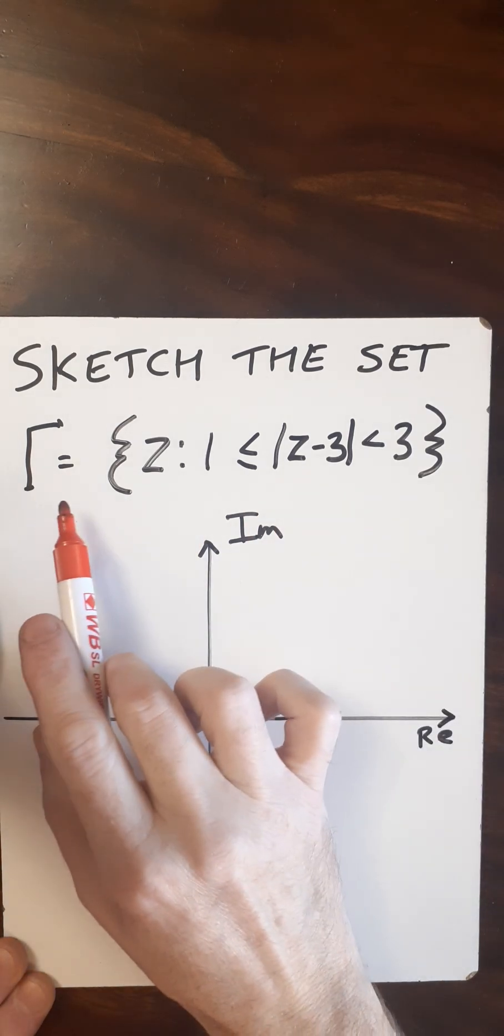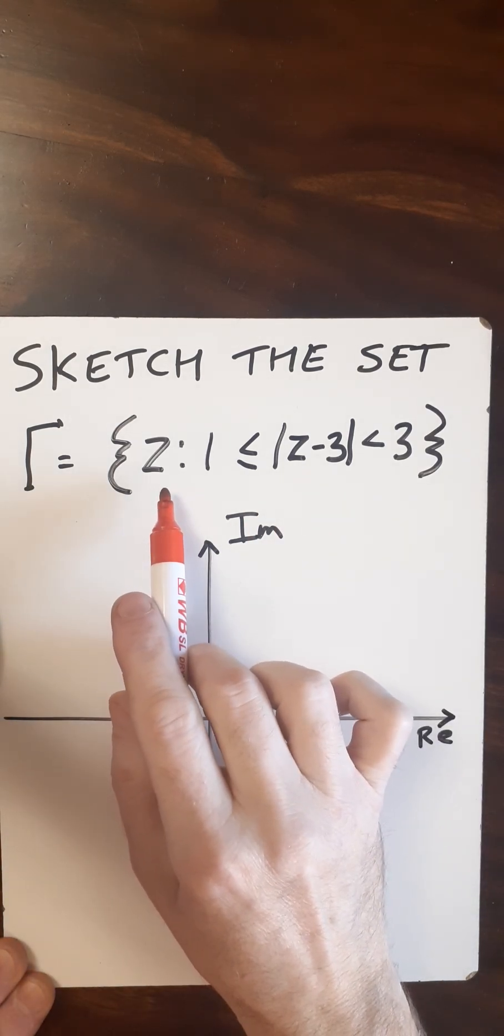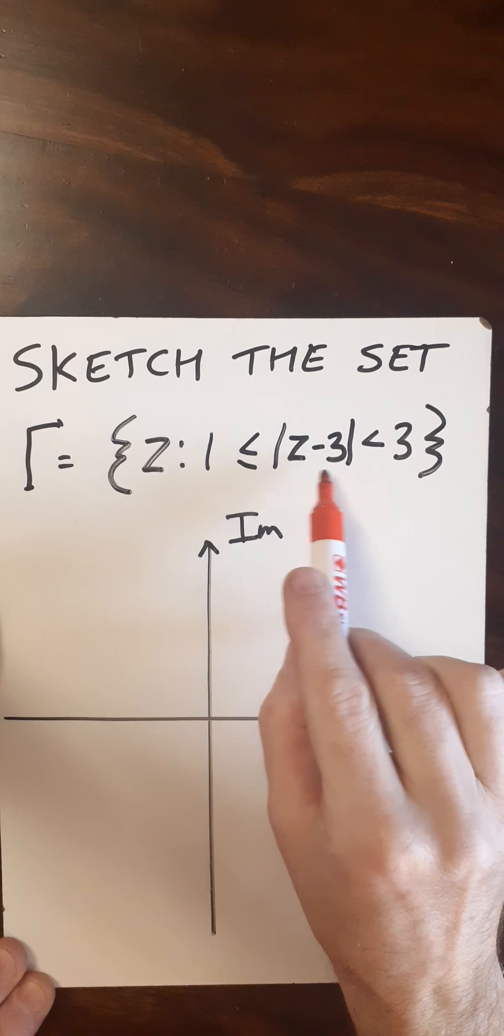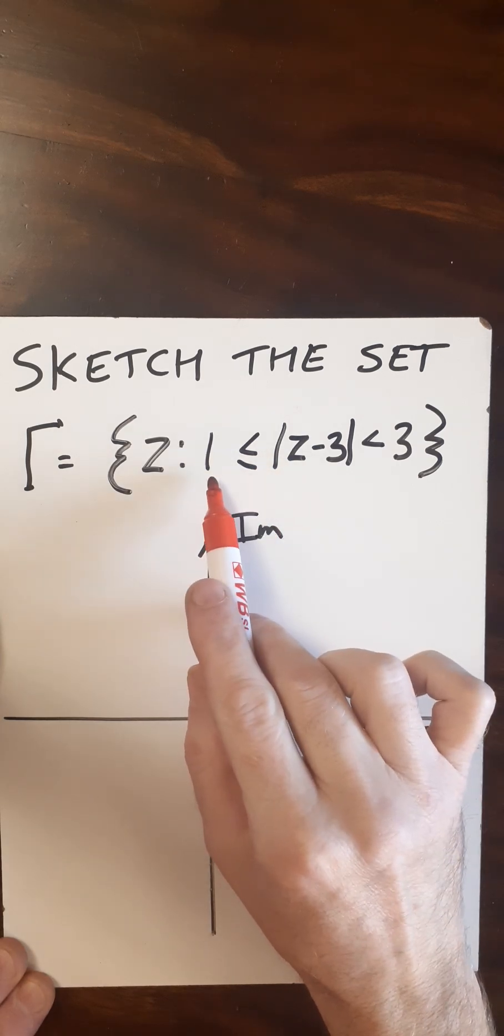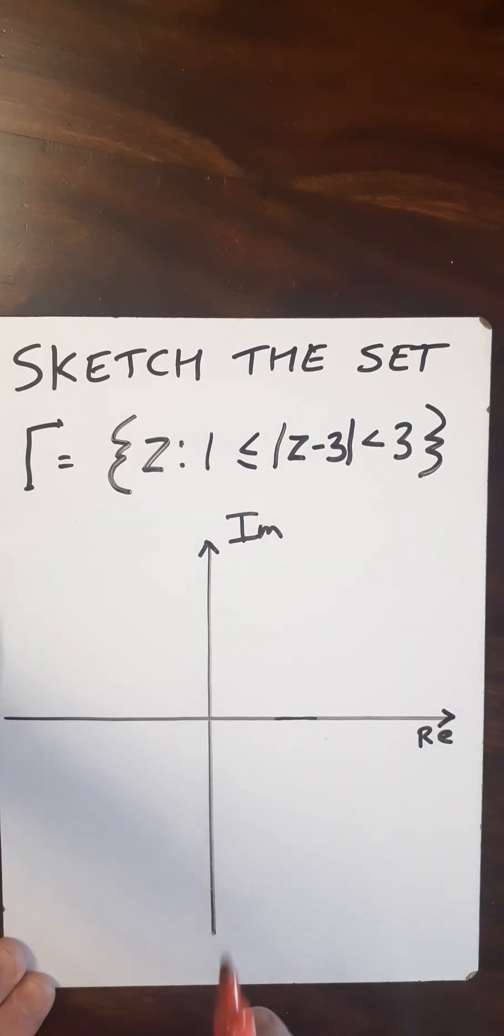So here we're going to sketch the set gamma, where the modulus of z minus three is greater than or equal to one, but less than three.